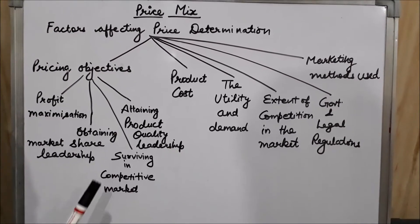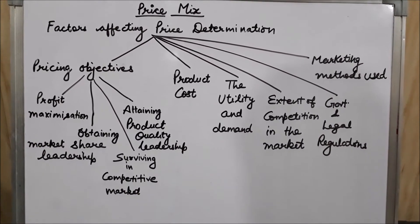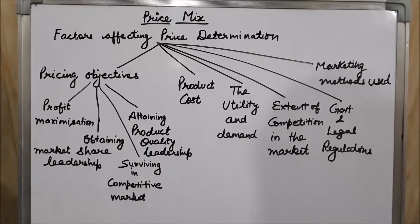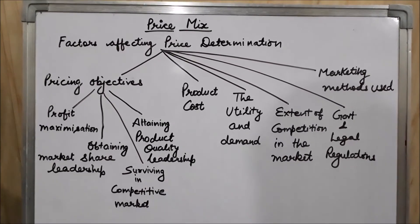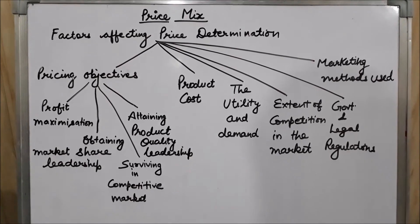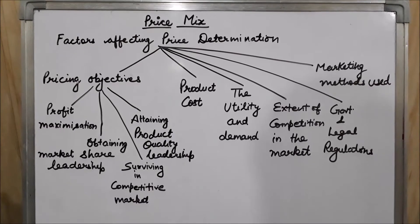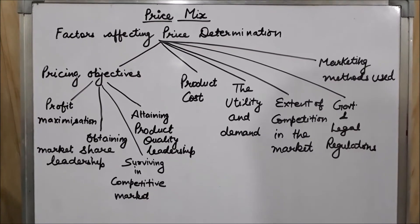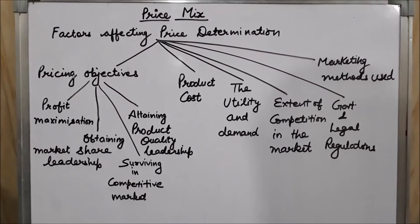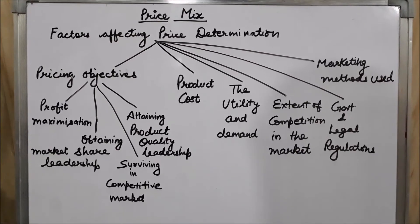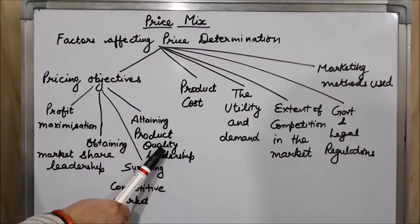The third pricing objective can be surviving in a competitive market. If there is tough competition and it is difficult to survive, the firm has to provide different schemes to customers — like giving rebates, discounts, utilizing other promotional avenues such as free gifts, or lucky draws. In this way they can survive in the competitive market.